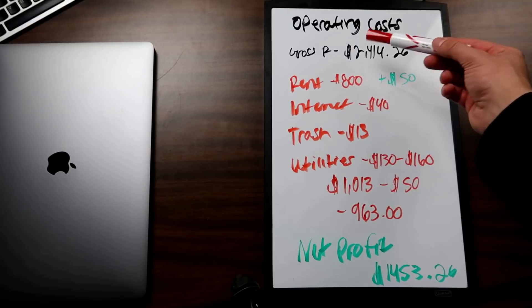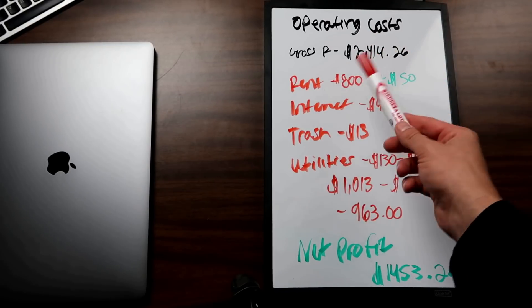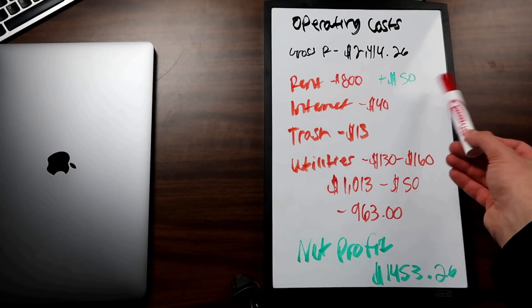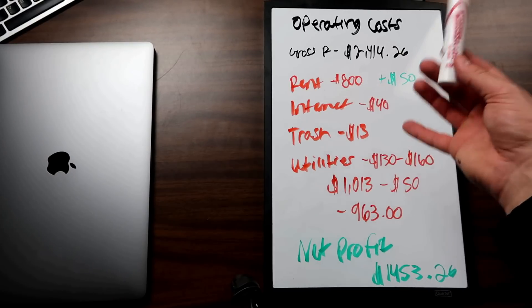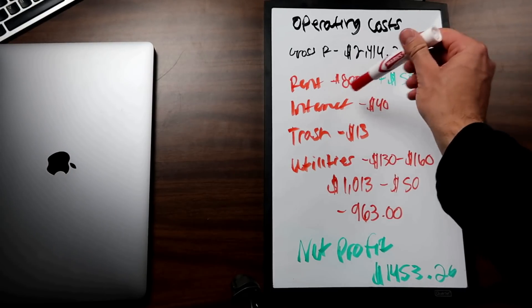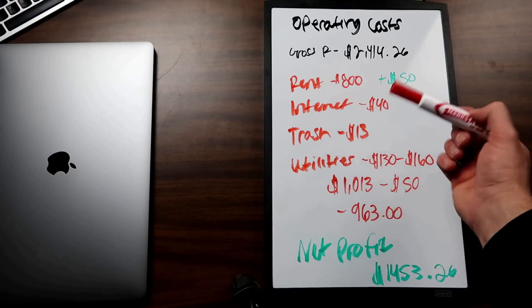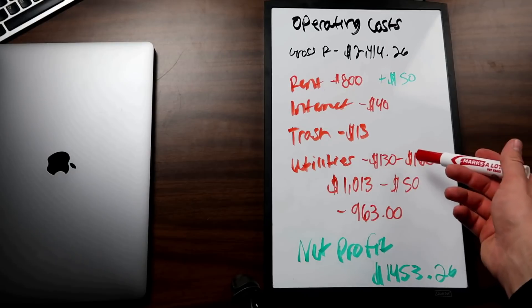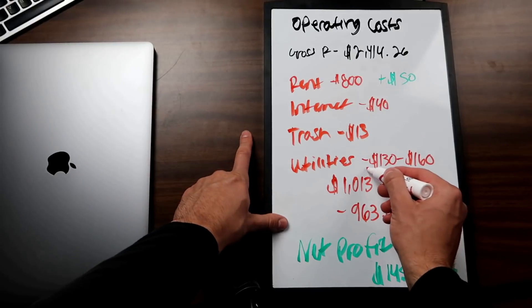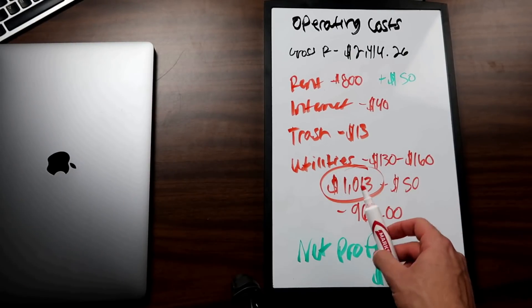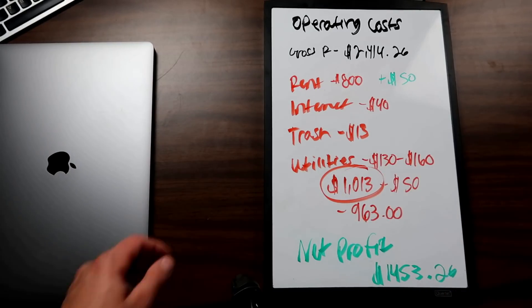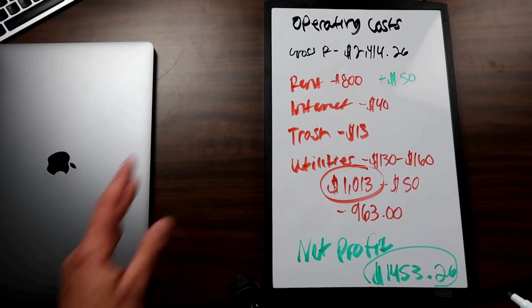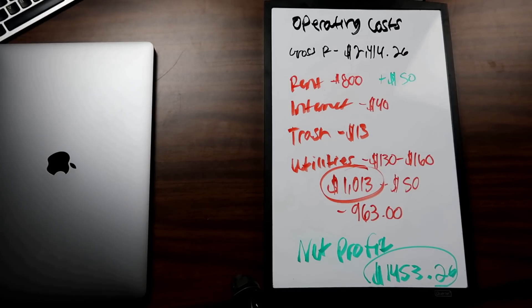Since my landlord pays me $50, I subtract that from $1,013, bringing my total monthly expense to $963. That leaves me with a net profit of $1,453.26. This varies month to month, obviously. One thing to note: these prices are completely relative to my situation. Some of you aren't going to have this low of a rent, and some of you may see different revenue figures.